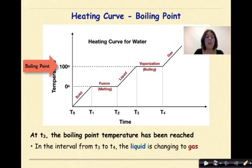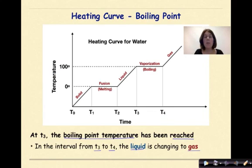At T3, the boiling point temperature has been reached. In the interval from T3 to T4, the liquid is changing to a gas. And again, this is known as vaporization. We'll see boiling. Both phases are present during this time interval. So from T3 to T4, you'll notice both liquid and gas being present.